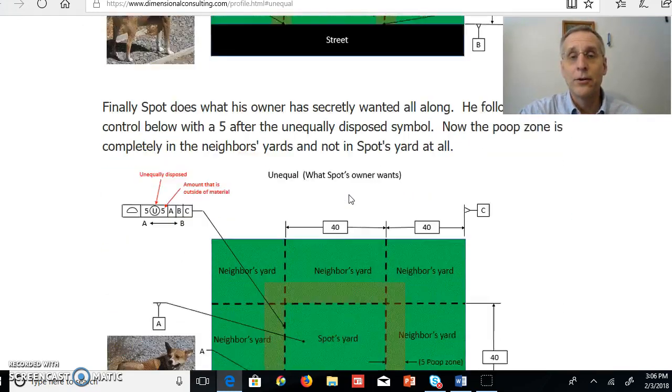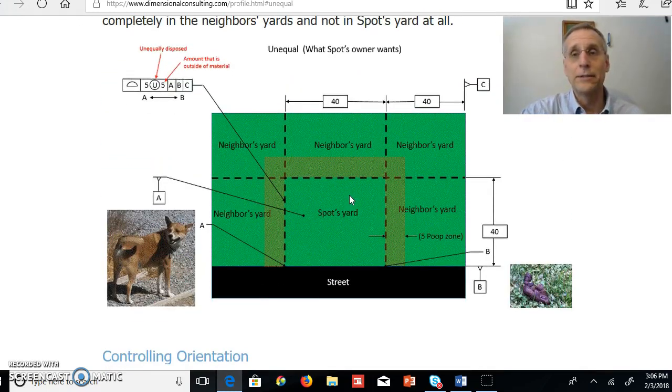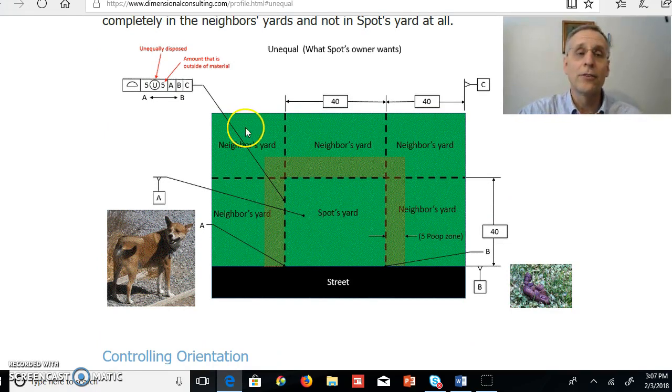And finally, what Spot's owner would really like, he won't admit it, but this is what he would really like, is to have the poop zone defined by this call-out, which has it still five feet wide, unequally disposed, and now it's five feet outside Spot's yard.